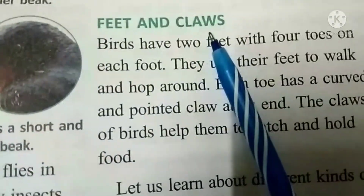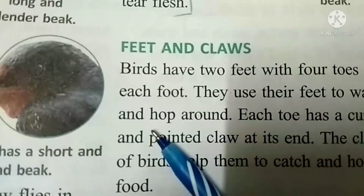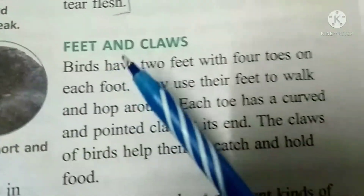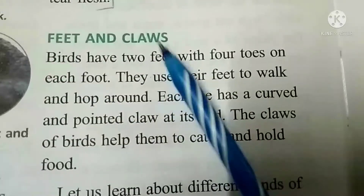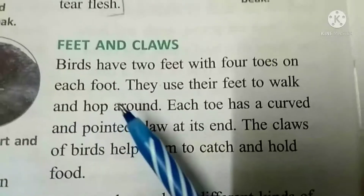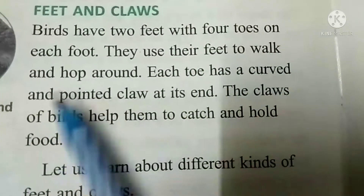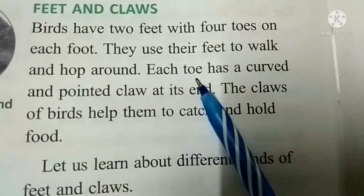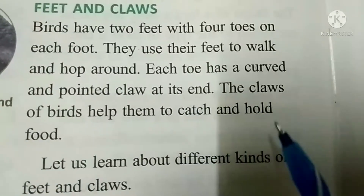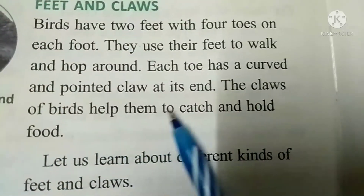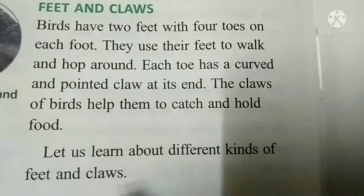Feet and Claws. Birds ke feet aur claws ke structure ke aadhaar par birds ka vargikaran kiya gaya hai. Bird ko alag-alag prakar mein bataya gaya hai, kyunki unke feet aur claws different hote hain. Birds have two feet and four toes on each foot. They use their feet to walk and hop around. Each toe has a curved and pointed claw at its end. The claws of birds help them to catch and hold food. Let us learn about different kinds of feet and claws.